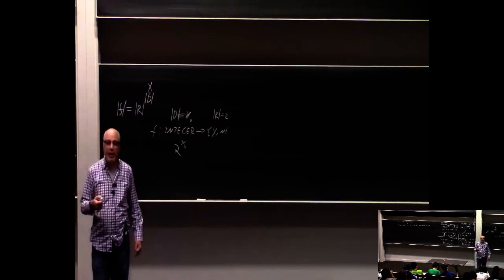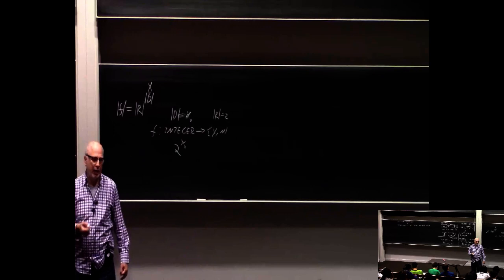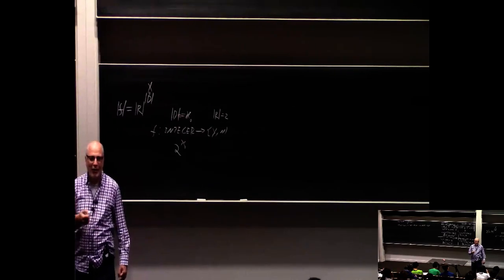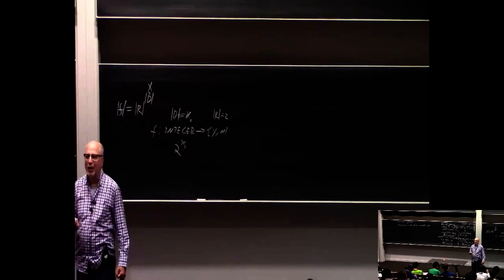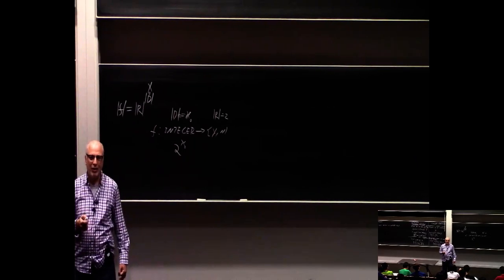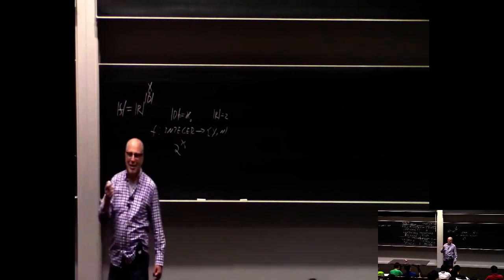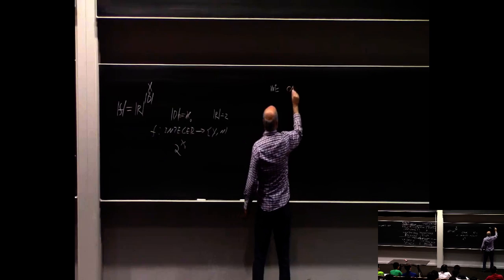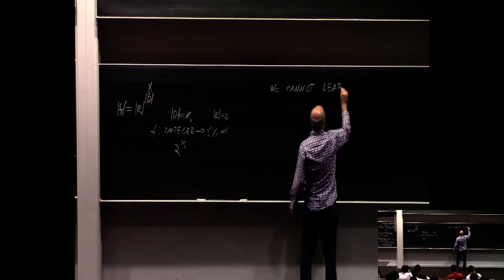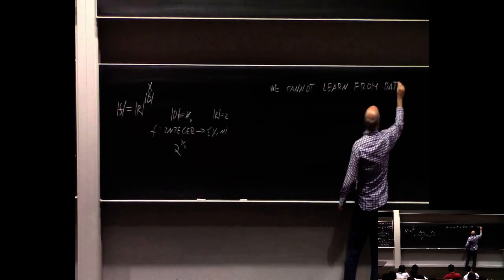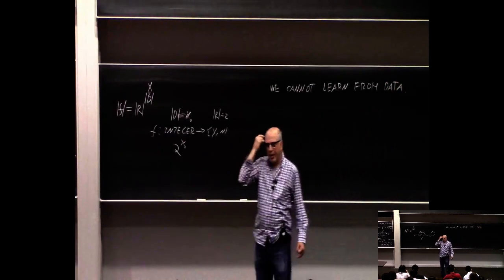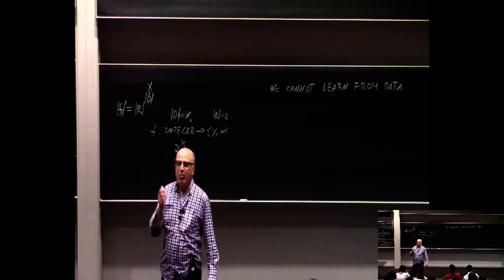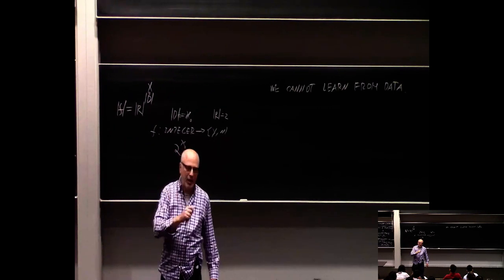Inductive bias is assumptions that you bring to the problem before you saw your current training data. More importantly, it's not based on your current training data — if it were, you've already started training. You need to bring other assumptions in from the outside. Here is the most important lesson from this course: you cannot learn from data alone. You can learn from data plus assumptions — or rather, from assumptions plus data, because the assumptions usually come first.